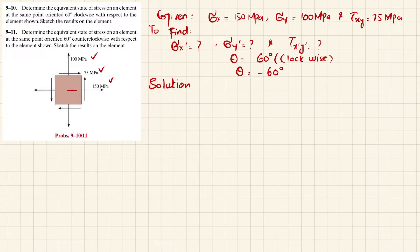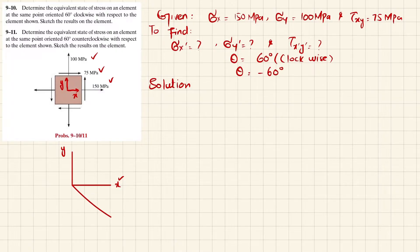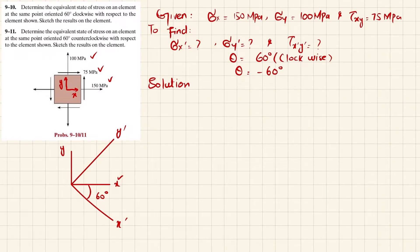Let's start with the solution. When you rotate — this is the x-axis and this is the y-axis — if you rotate the x-axis to an angle of 60 degrees clockwise, this is 60 degrees clockwise. Definitely your y-axis will also move to a new coordinate system, which will be y dash.